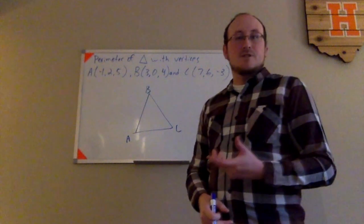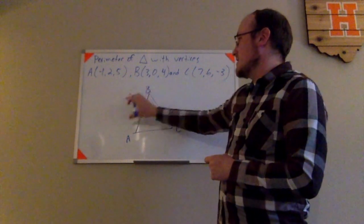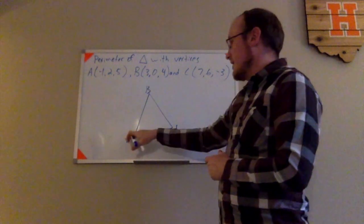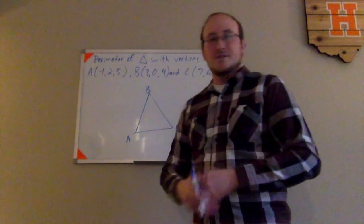I'm going to have to do three different distance formula problems to find the lengths of the sides. I'm going to have to use points A and B to find this length, B and C to find this length, and finally pairing A with C to find that length. So I have a little bit of work to do to compute those distances.